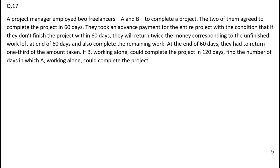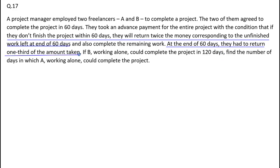They took an advance payment for the entire project with the condition that if they don't finish the project within 60 days, they will return twice the money corresponding to unfinished work left at the end of 60 days and also complete the remaining work. At the end of 60 days, they had returned one third of the amount taken. If B working alone can complete the project in 120 days, find the number of days in which A working alone can complete the project. The underlined statements are important ones.